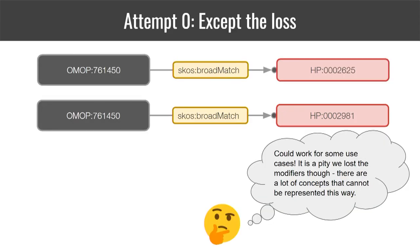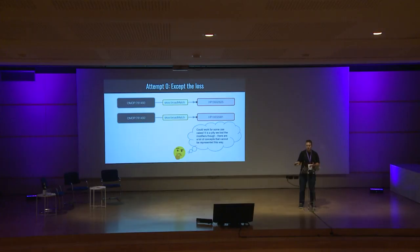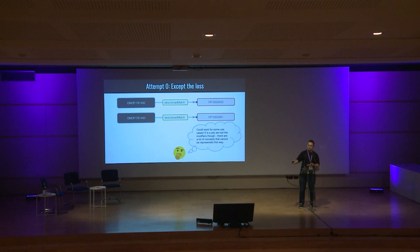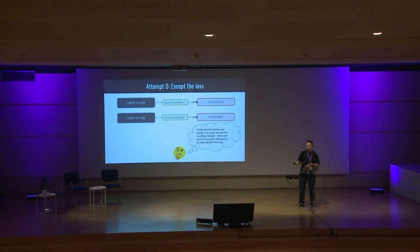We started thinking about what we can do to represent something like this. The first one — we call it attempt zero — we just accept the loss and say: we have a complex expression, so we map to the parts of it that are critical using our normal mapping vocabulary. You can see two broad match statements that reflect parts of this mapping separately, and there are many use cases for which this would be totally sufficient.